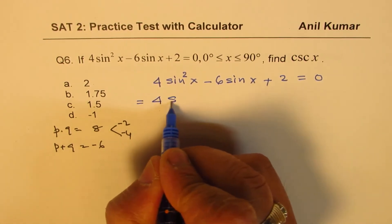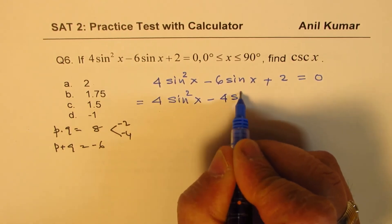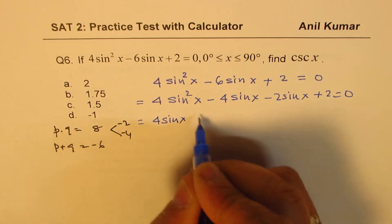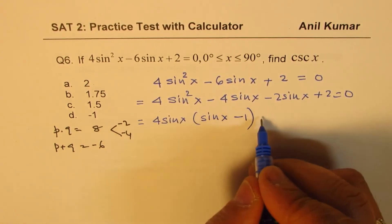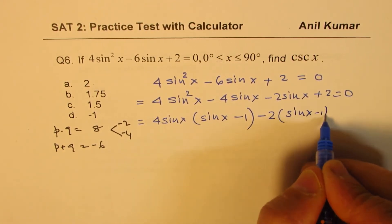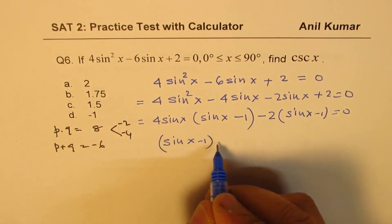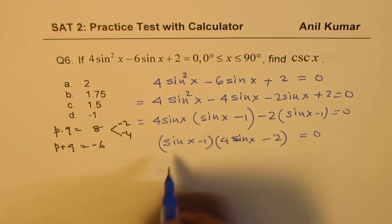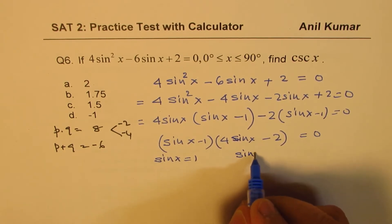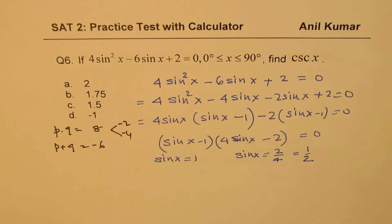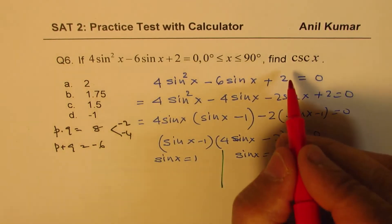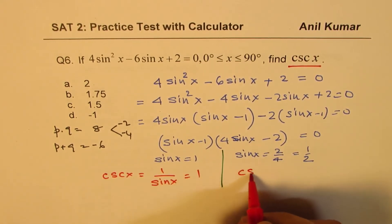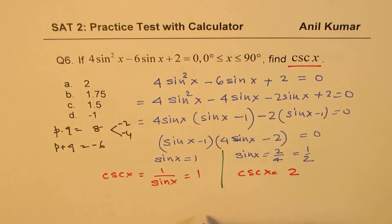Factoring: 4 sine squared x minus 4 sine x minus 2 sine x plus 2 equals 0. Factor out 4 sine x from the first two terms giving (sine x minus 1), and factor out minus 2 from the last two giving again (sine x minus 1). So (sine x minus 1)(4 sine x minus 2) equals 0. This gives sine x equals 1 or sine x equals 1/2. Since cosecant x is 1 over sine x, the reciprocal of 1/2 is 2, so option A is correct.